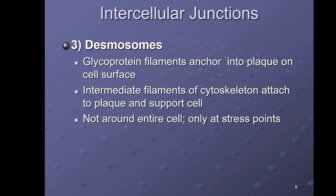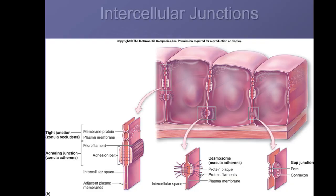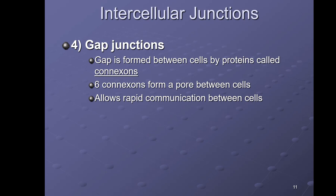Unlike tight junctions or adhering junctions, desmosomes don't go all the way around the cell — they're only found at specific points where the cell is stressed. Going back to the picture, you can see a desmosome here and another one here. The close-up shows the plaque and the intermediate filaments from the cytoskeleton attaching to it.